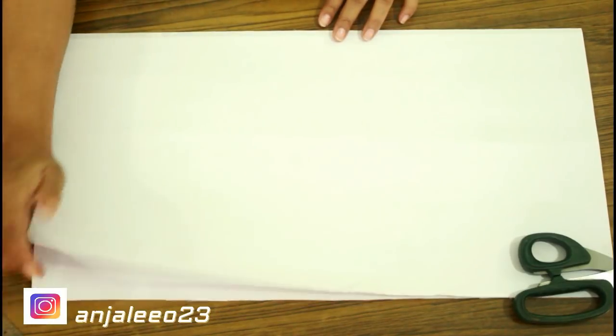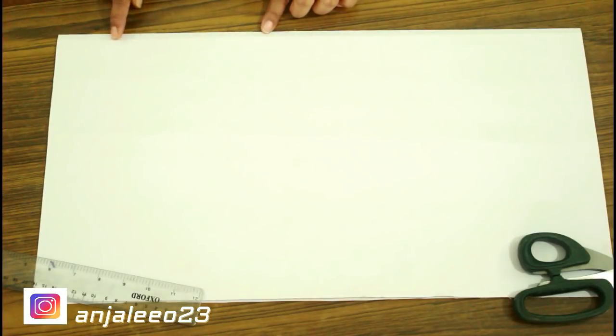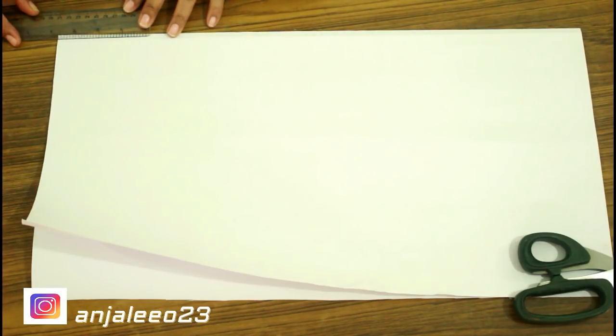This is my drafting paper and this is folded from one side and open from one side. Now from the folded side I'm going to start giving the marking of my sleeves. First I'll be marking the cap height.